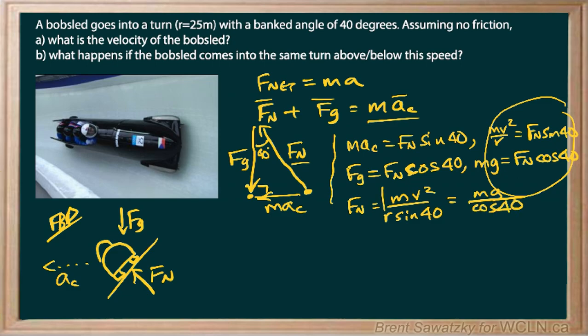Okay. So now we have a nice little relationship to work from here. First of all, we can see that the masses cancel. So the mass of this bobsled doesn't matter. And now we can rearrange. So we can solve for v. And you can show a couple steps in how you lay that out. But g r sine 40 over cos 40.